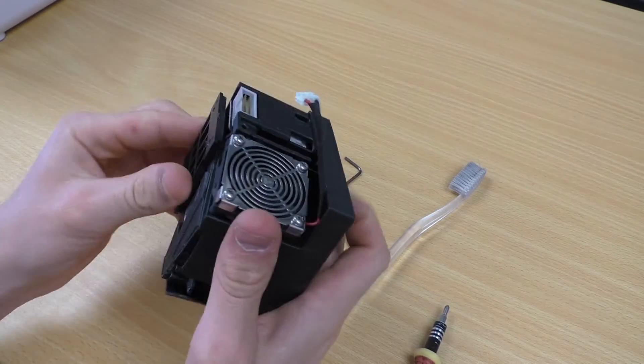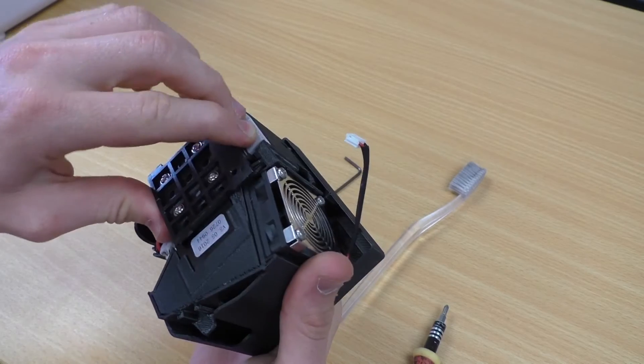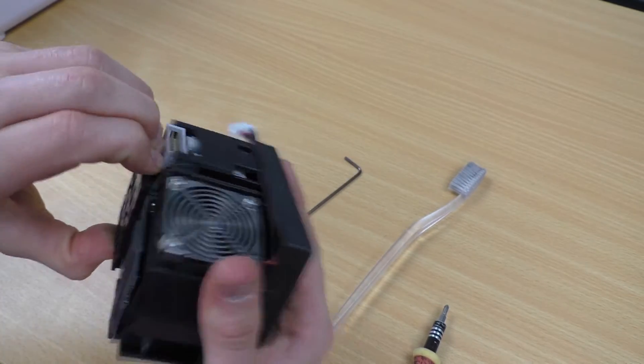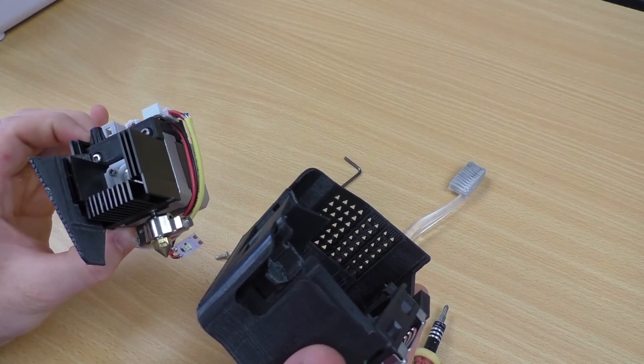Once those two screws have been removed, hold the motor section here at the back where this plate is, this black plastic plate, and then pull the cover away from the motor.